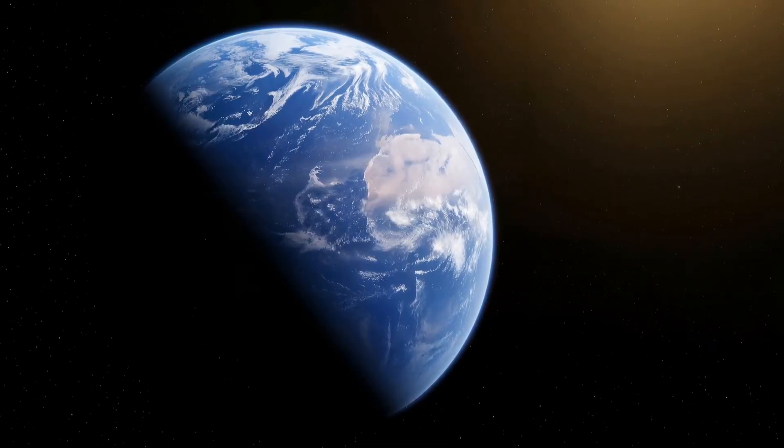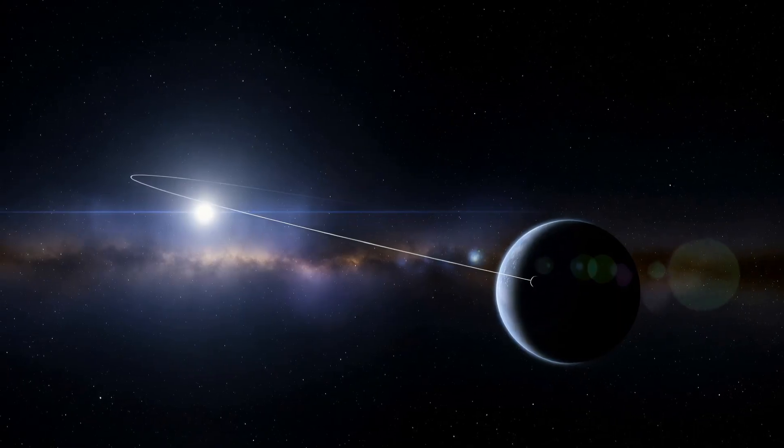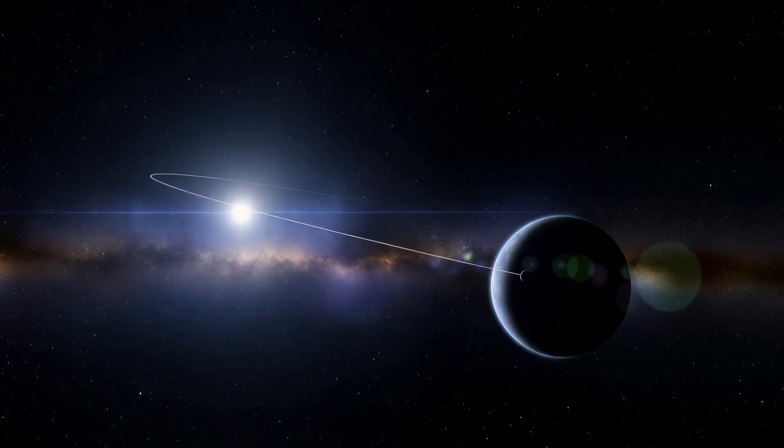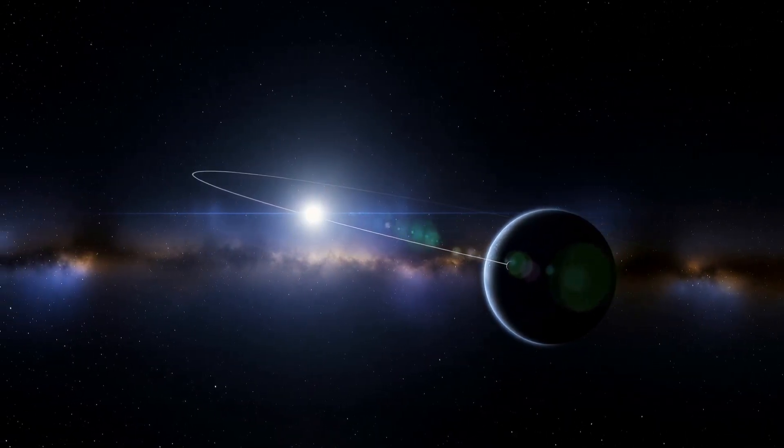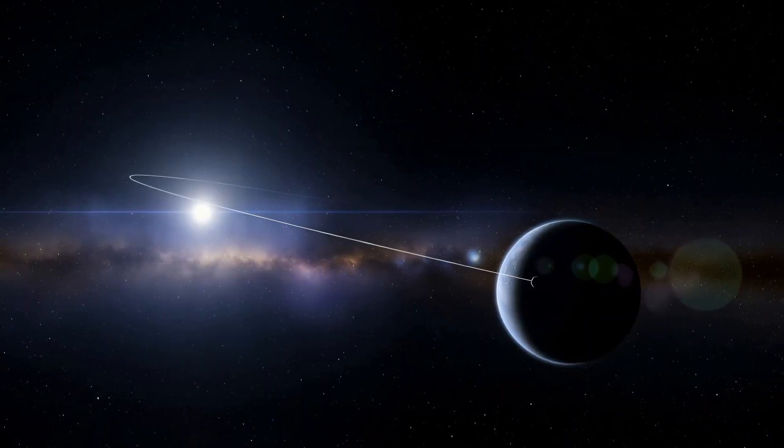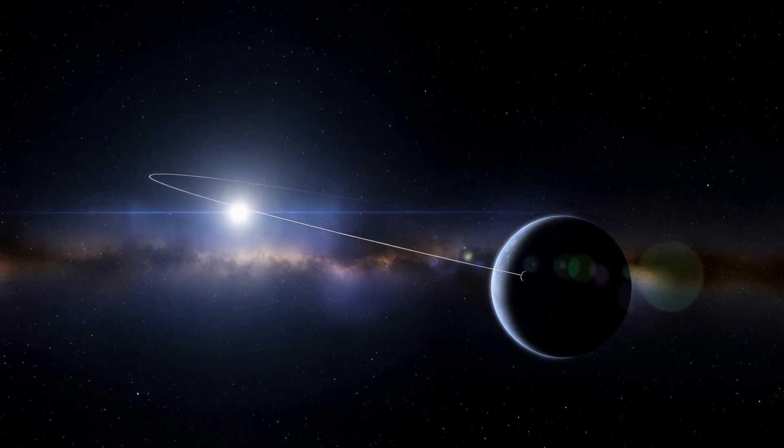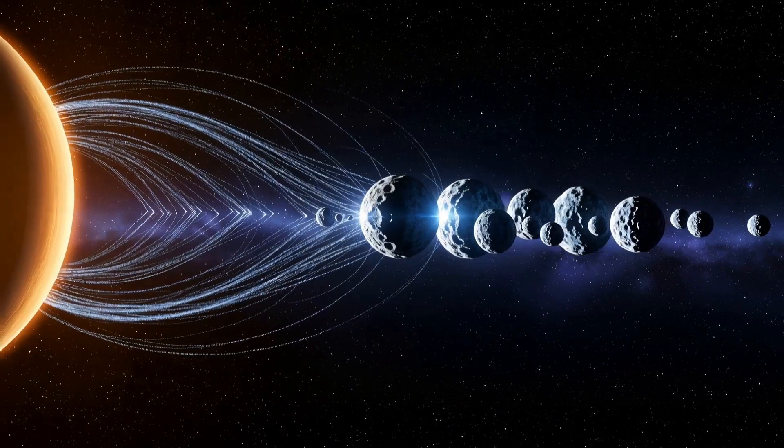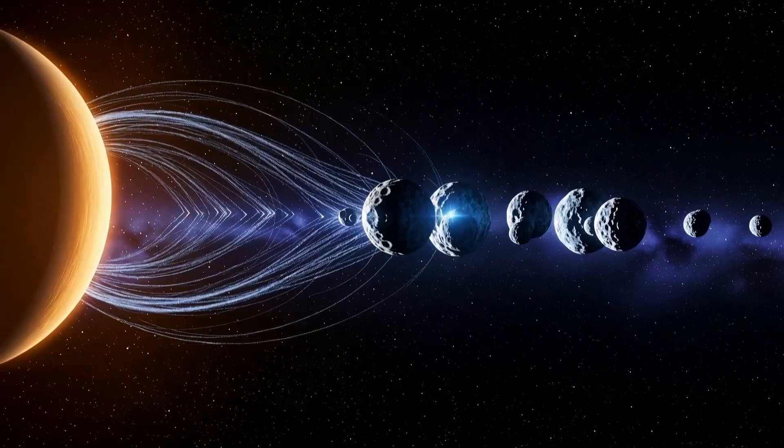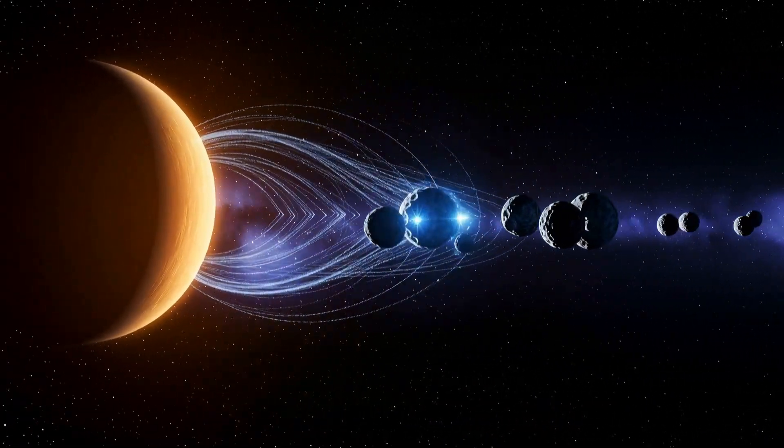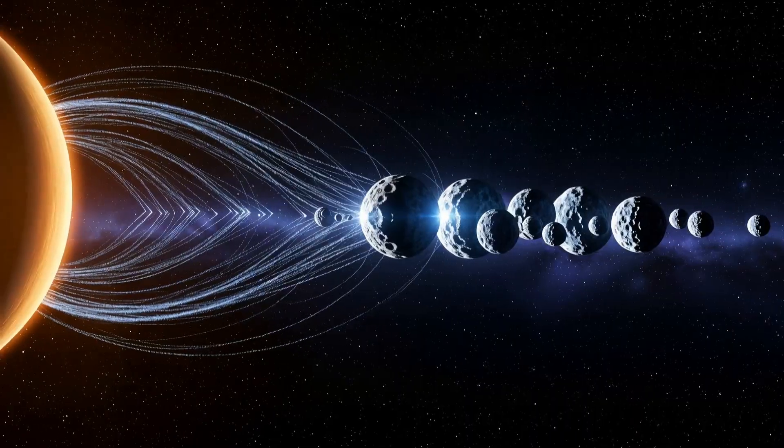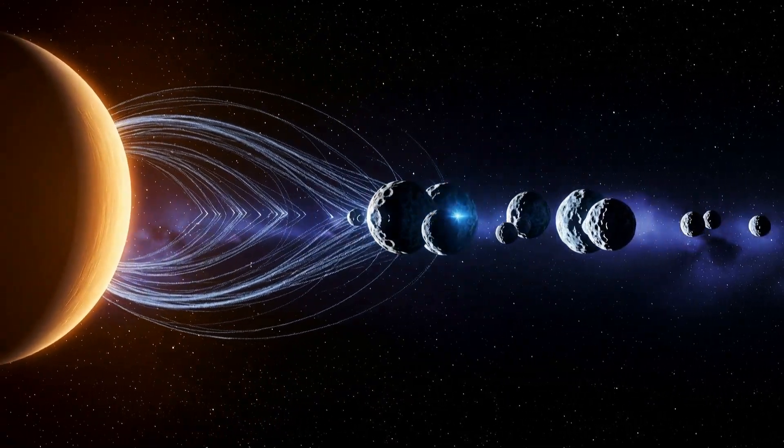But its orbit would be unlike anything we know. It would be on a hugely stretched-out path, taking it hundreds of times farther from the Sun than Earth. A single year on Planet 9 could last between 10,000 and 20,000 Earth years. From its distant home, its immense gravity would act like a cosmic puppeteer, slowly aligning the orbits of those smaller objects over millions of years, creating the exact clustering we see today.